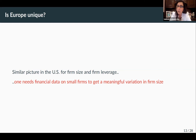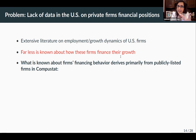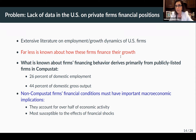What we know about firm financing is based on the Compustat data in the US, which covers only large publicly listed firms. Unfortunately, these firms cannot speak for the US economy — they cover only 26% of domestic employment and 44% of domestic output. There's an extensive literature on employment growth dynamics of US firms based on census data, but we don't know how these firms finance their growth. Clearly, private firms' financial positions are very important for understanding financial constraints and the transmission of macroeconomic shocks.